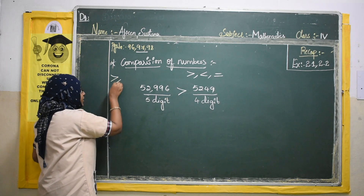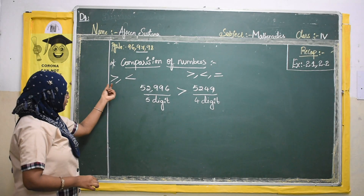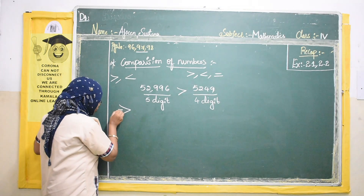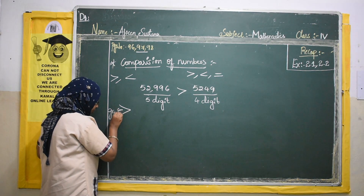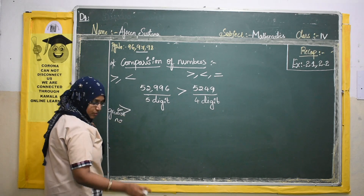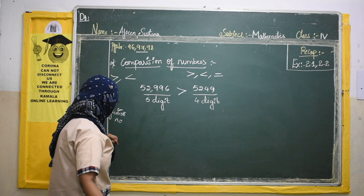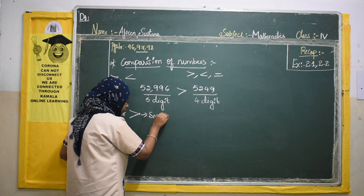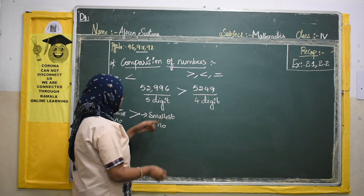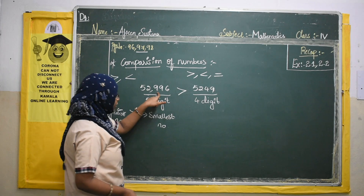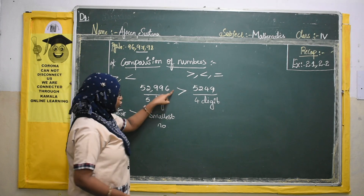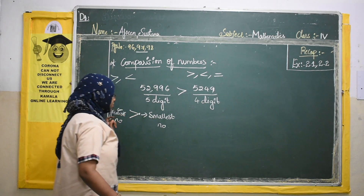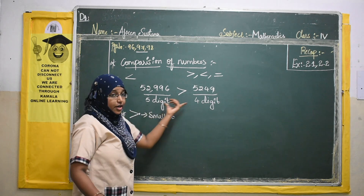Both the greater-than and less-than symbols look the same but are oriented differently. A simple trick: think of it as an open mouth. The open side of the symbol always faces the greatest number, and the pointed end points to the smallest number. So the open mouth denotes the greatest number and the endpoint shows the smallest number.